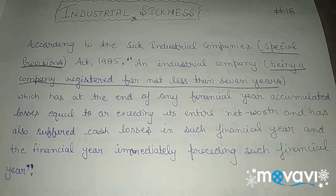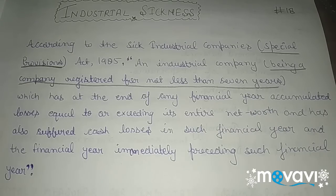and that industry also suffered cash losses in such financial year — after all those accumulated losses, the company must have also suffered some cash loss in that financial year. And the financial year in which these cash losses and accumulated losses occur should be immediately preceding the current year.